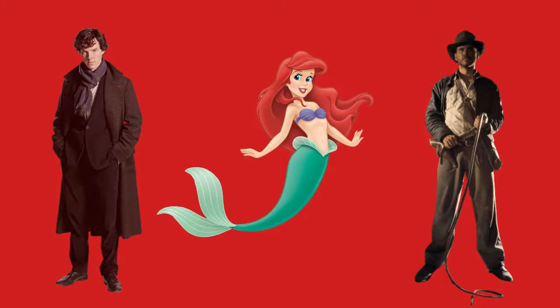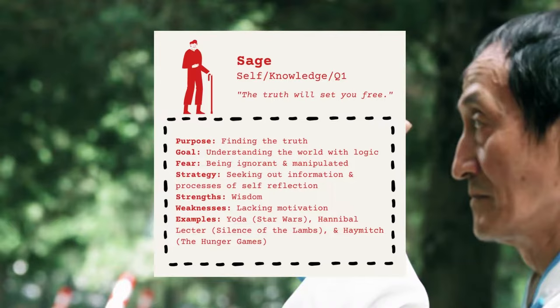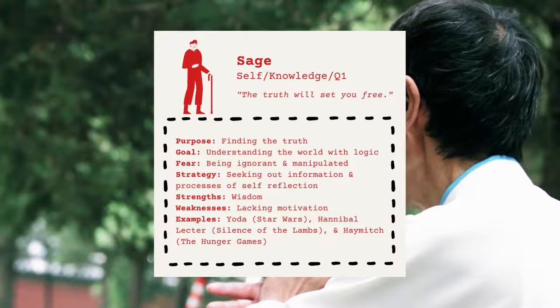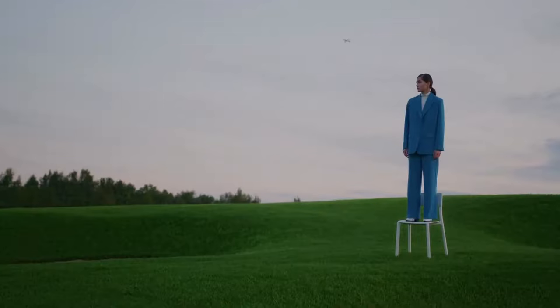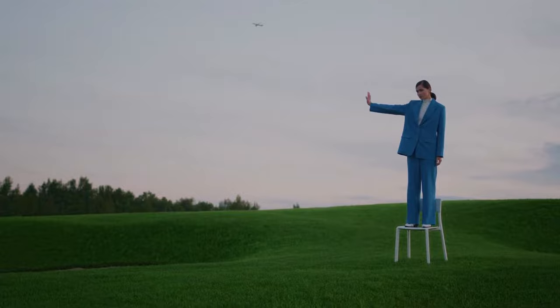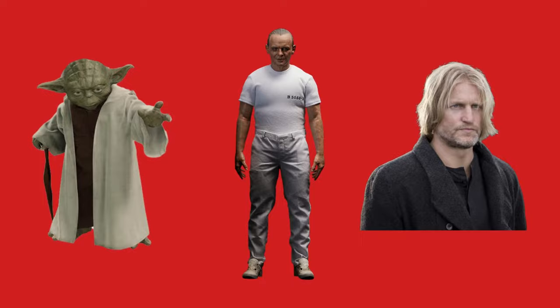The sage is a self-type archetype that believes peace can be found in knowledge. Their purpose is finding the truth. These characters attempt to understand the world in a logical way, and they fear being ignorant or manipulated. To avoid this, they seek out information and often go through the process of self-reflection. They are very wise, but sometimes lack the motivation to help themselves and others. Famous sage characters include Yoda, Hannibal Lecter, and Hermione.